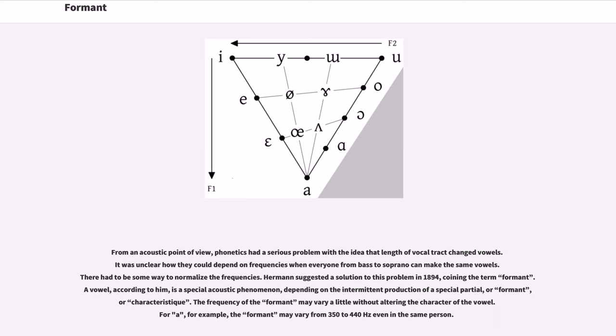From an acoustic point of view, phonetics had a serious problem with the idea that length of vocal tract changed vowels. It was unclear how they could depend on frequencies when everyone from bass to soprano can make the same vowels. There had to be some way to normalize the frequencies.